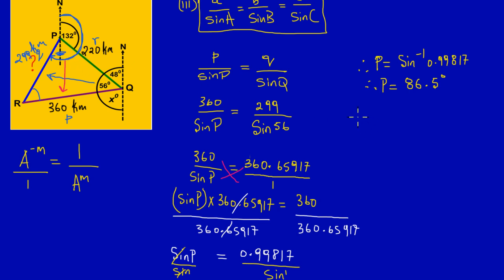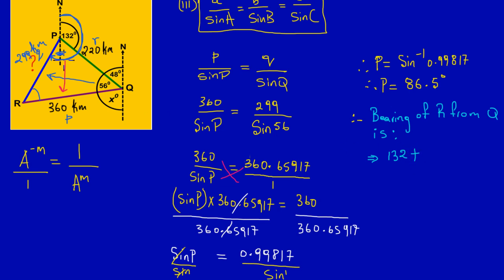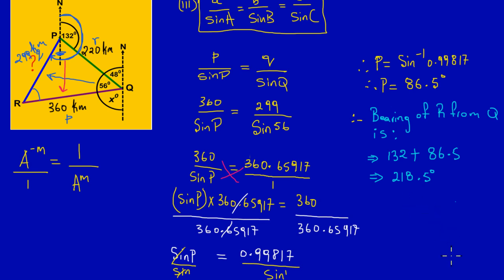To conclude, the bearing of R from P equals 132° plus the angle we found inside the triangle (86.5°). So 132 + 86.5 = 218.5 degrees. Therefore the bearing of R from P is 218.5 degrees. Feel free to leave any comments or post a question if you're still unsure, and we'll get back to you as soon as possible.